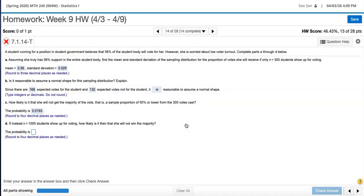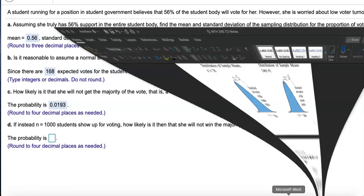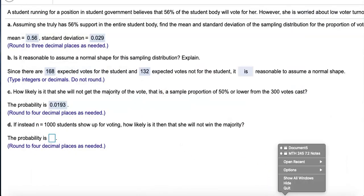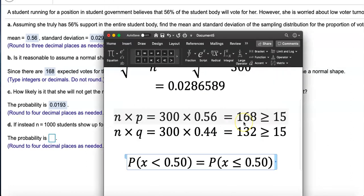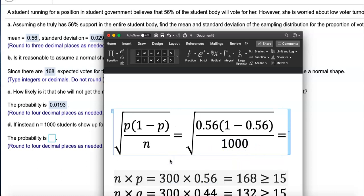Last one. Now they want you to do a little more work. Instead of n equals 300, what if n equals 1,000? Well, if they change the sample size we have to find the standard deviation all over again. But don't worry, we got this. Instead of 300, type in this time 1,000 for the sample size.